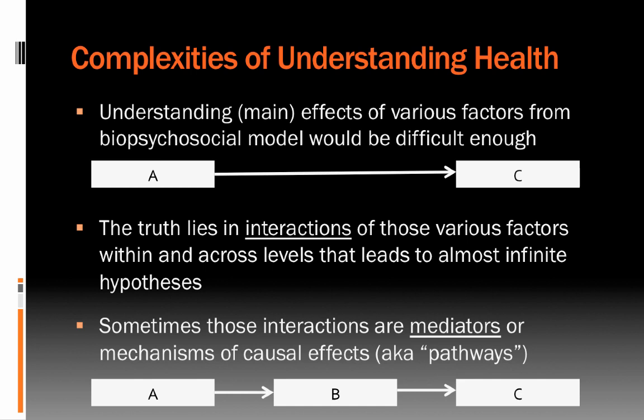One of the things that makes understanding health from a biopsychosocial perspective so challenging is that it's super complex. There aren't straight lines from one thing to another, typically. We often talk about main effects of various factors — things like A goes to C. For example, A might be the amount of saturated fat one eats and C might be heart disease. But it's not that direct or causal. There are lots of things that influence it, make it worse, or protect against that risk. The truth is that interactions of factors, both within and across levels, lead to almost infinite hypotheses or pathways by which a biopsychosocial factor can influence outcomes.